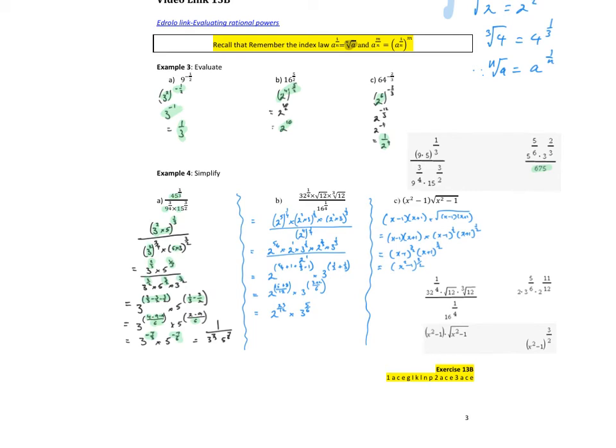You guys can sit and have a play with it. 32 to the 1 quarter. Again, let's turn everything into its base form. 32 is 2 to the 5. 12 is 4 times 3. 12, 4 times 3. And 16 is 2 to the 4. So multiply those fractions through everywhere. And it's just a case of being careful.